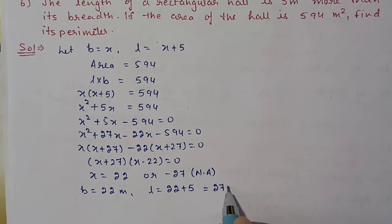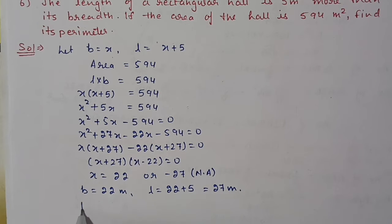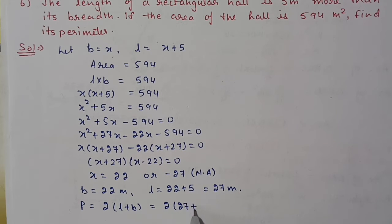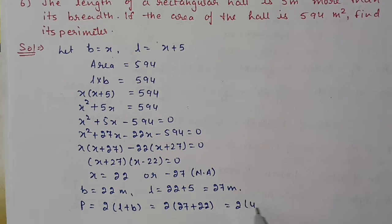Next we have to find the perimeter. Perimeter equals 2 times (l plus b), which is 2 times (27 plus 22), equals 2 times 49, equals 98 meters.